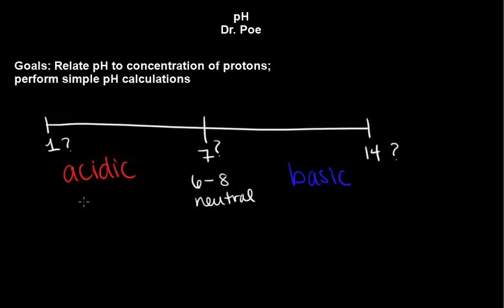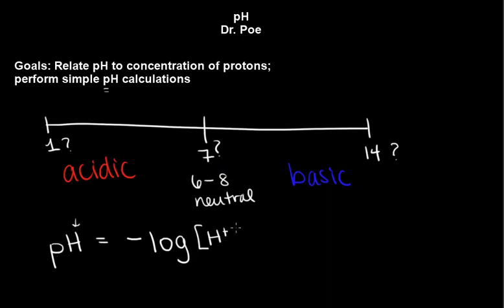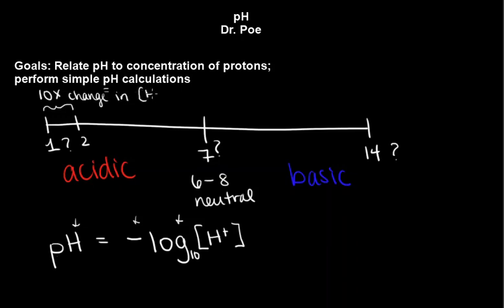What you need to remember is that anytime you see a P, in terms of pH, the P really means negative log. And then for the H, that implies the concentration of protons in the solution. So because this is negative, it's really kind of difficult to think about. And because this is log, remember it's base 10.